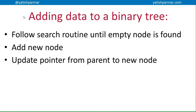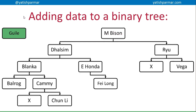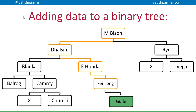If you want to add data to a binary tree, you basically follow the search routine until you find an empty node, and then you add that new node and update the pointer from the parent to the new node, because it previously would have been null. For example, I'm going to put Guile into my binary tree using the search algorithm. Guile versus M. Bison — lower, go left. Guile versus Dao Sim — higher, go right. Guile versus E Honda — higher, go right. Guile versus Fei Long — higher, go right. I insert Guile, and the null pointer from Fei Long now points to the memory location where Guile is stored.